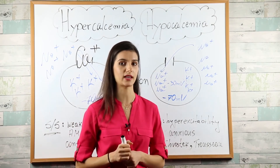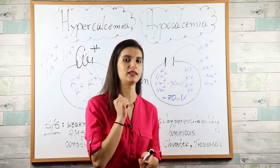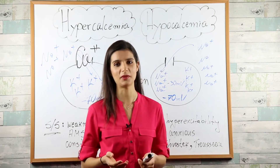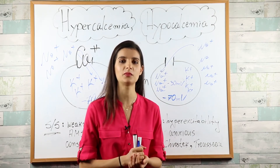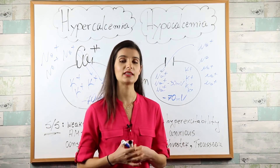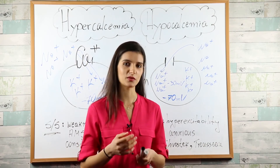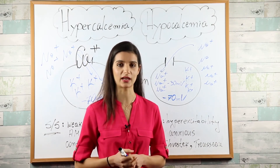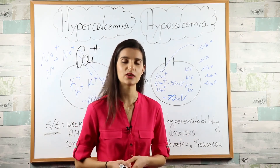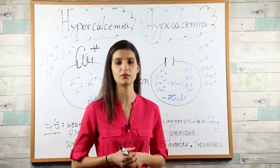That's how we can explain Chvostek's sign. What you would do is tap at the angle of the jaw and you would see facial muscle twitching. Why is this happening? Because you are tapping on top of the hyperexcitable facial nerve, and this hyperexcitable nerve needs just a little bit of a tap to depolarize and fire, thus causing the muscles it supplies to contract. Easy, right? Why would you feel anxious? Imagine the nerve cells in your brain are constantly firing — yes, you would definitely feel anxious and irritable.